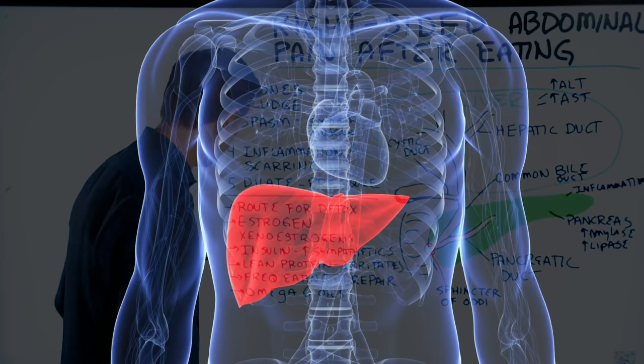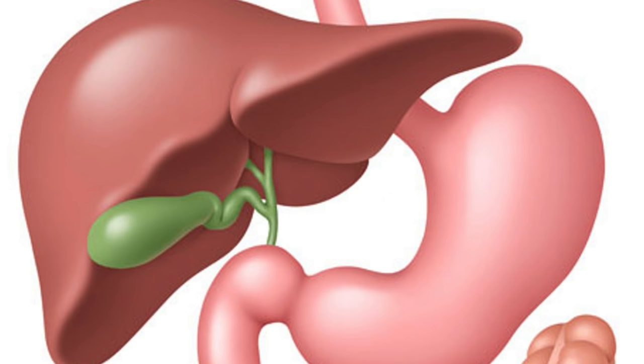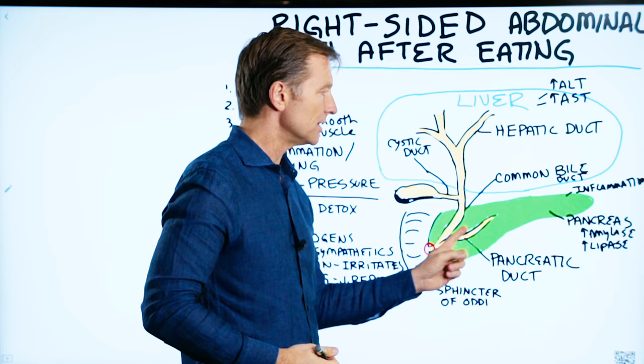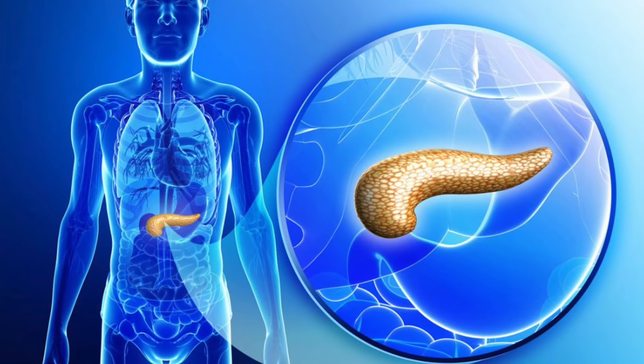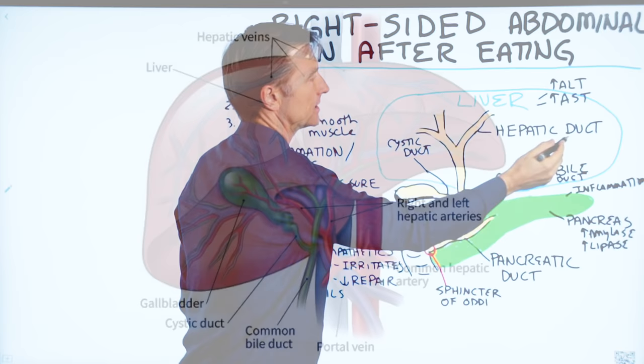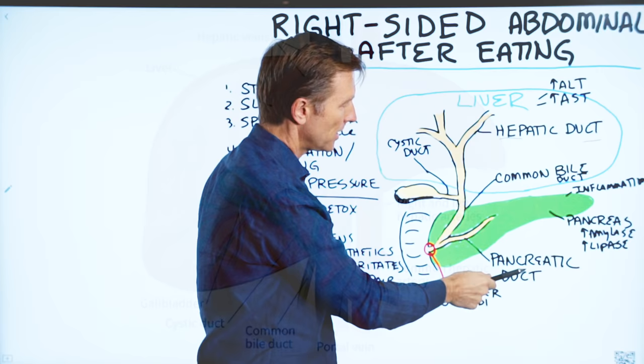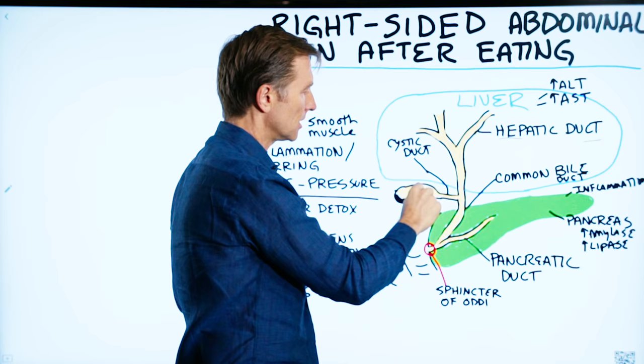You have the liver on the right side, and then you have the gallbladder, also on the right side. Underneath that, extending to your left side, you have the pancreas, which spreads left and also a little to the right. And then you have all these little tubes called ducts — the hepatic duct, the common bile duct, the cystic duct, the pancreatic duct — basically just tubes draining from the liver down into the gallbladder and then down into the small intestine.